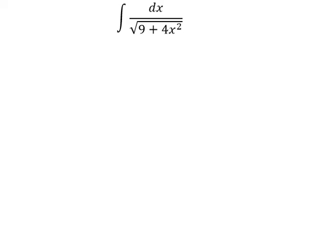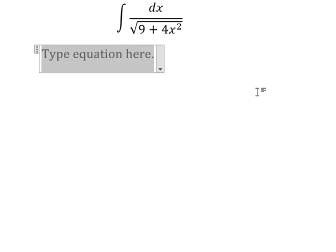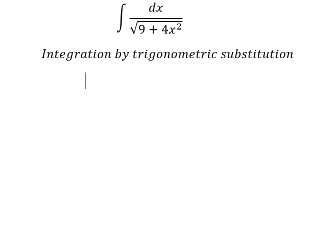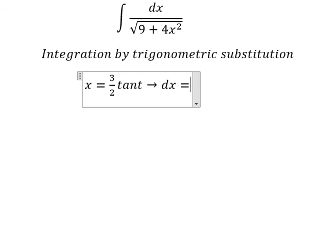We need to use integration by trigonometric substitution. So we need to change x equals to 3 over 2 times tan t. So we will get dx equals to 3 over 2 dt over cos squared t.